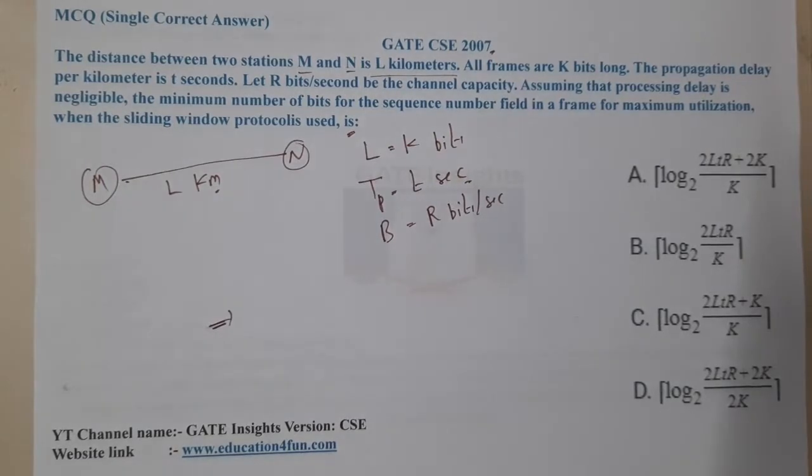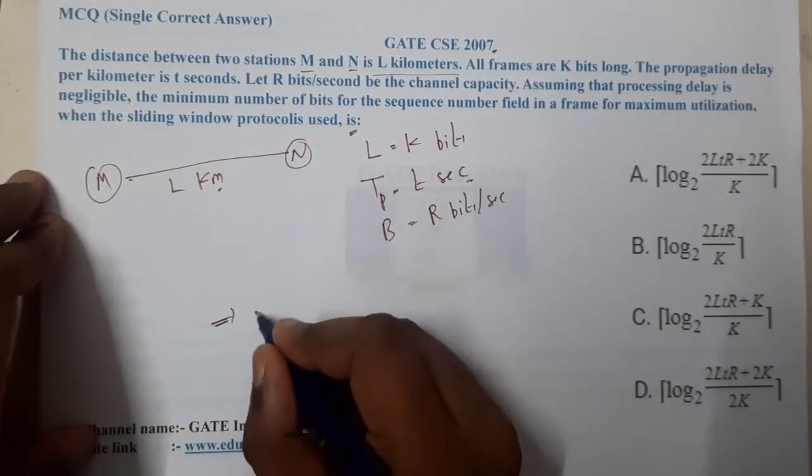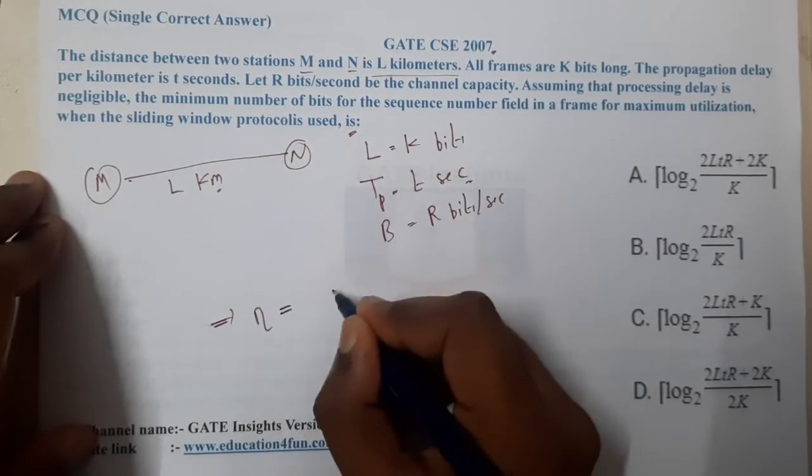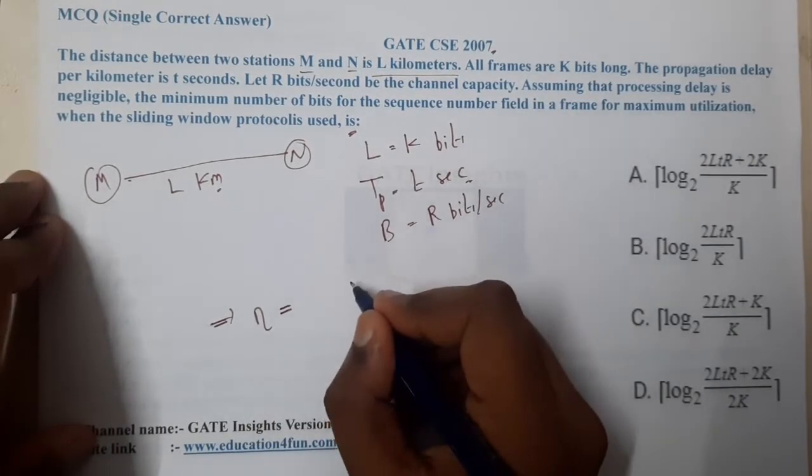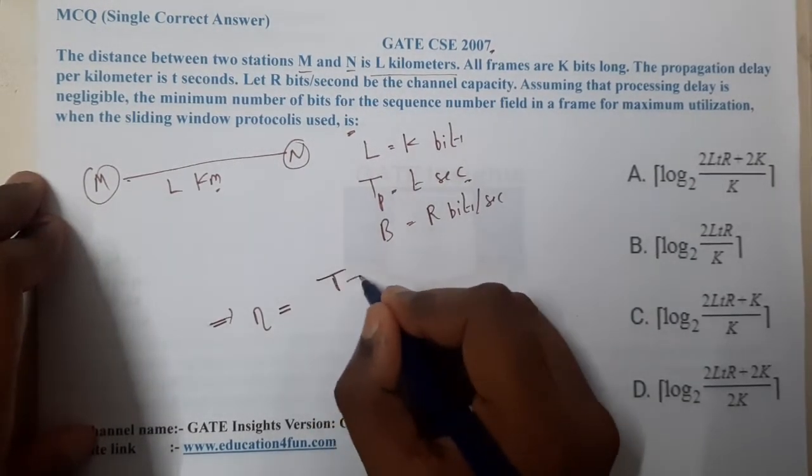Let us try with the help of our original formulas. What is efficiency? Efficiency equals Tt divided by Tt plus 2 times Tp. Let us write the full form first.